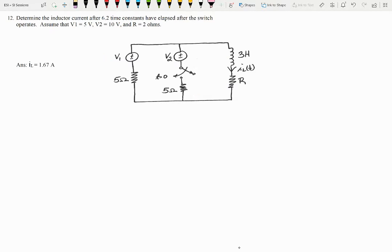This question says determine the inductor current, I of L, after 6.2 time constants. So time is equal to 6.2 tau, after they have elapsed, after the switch operates.